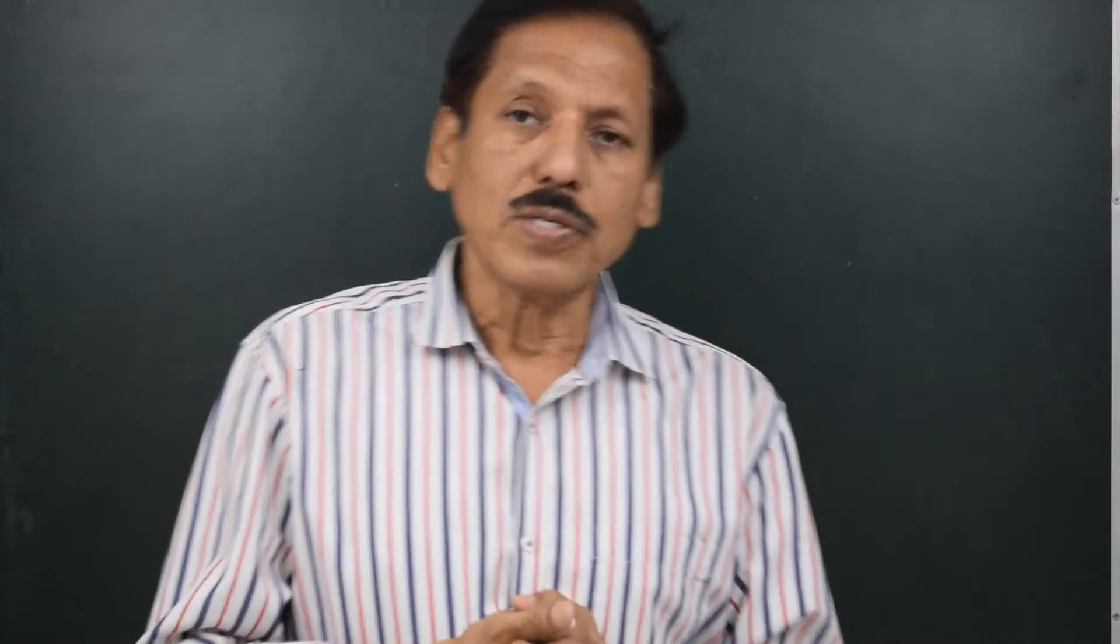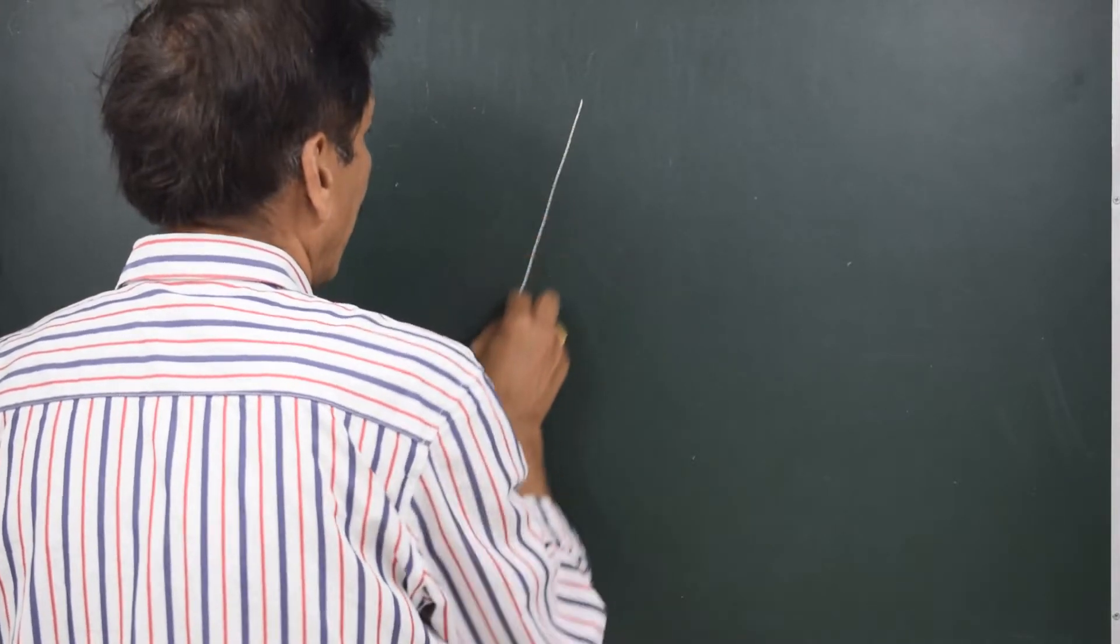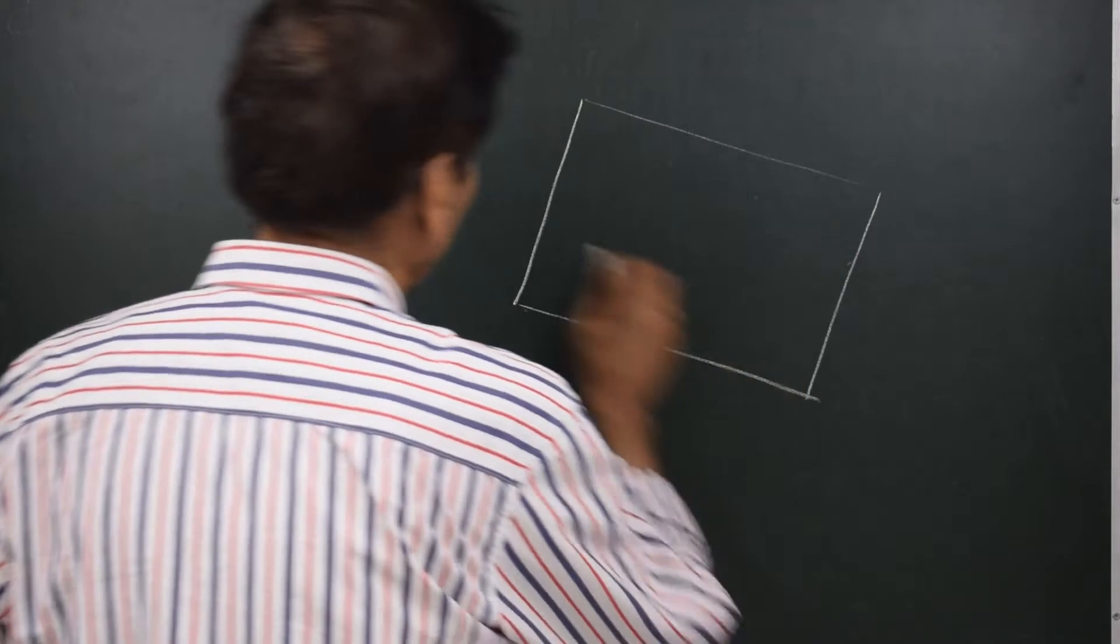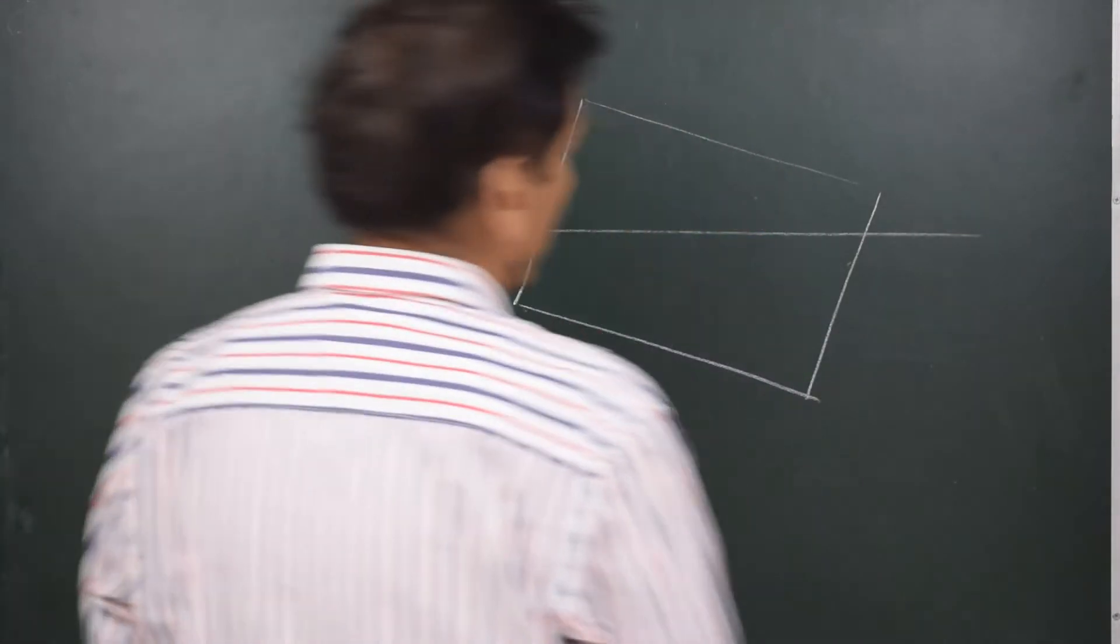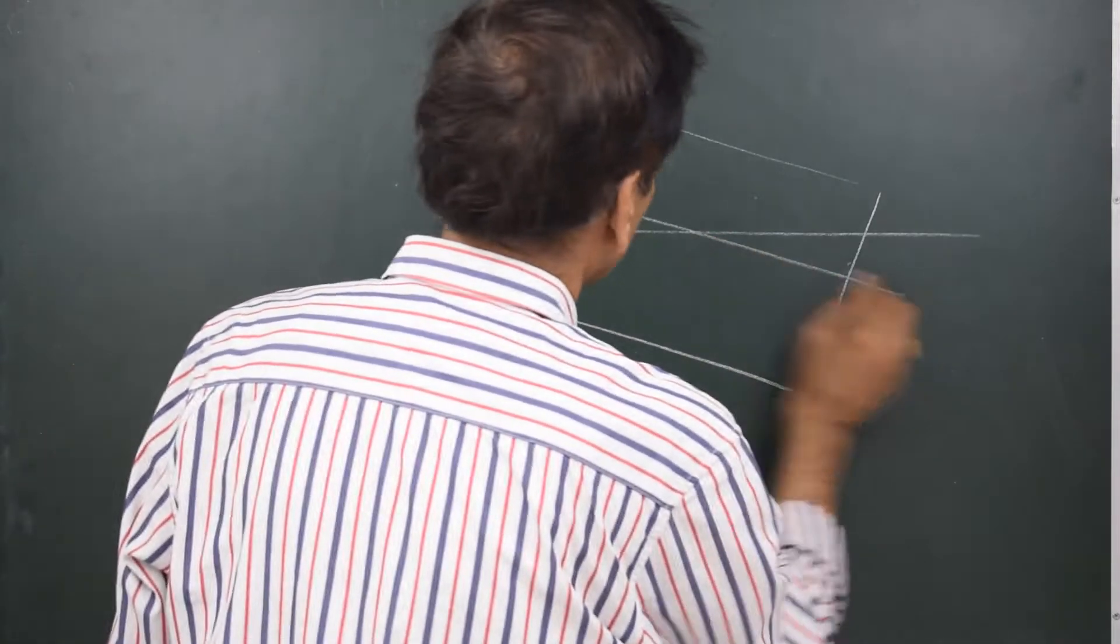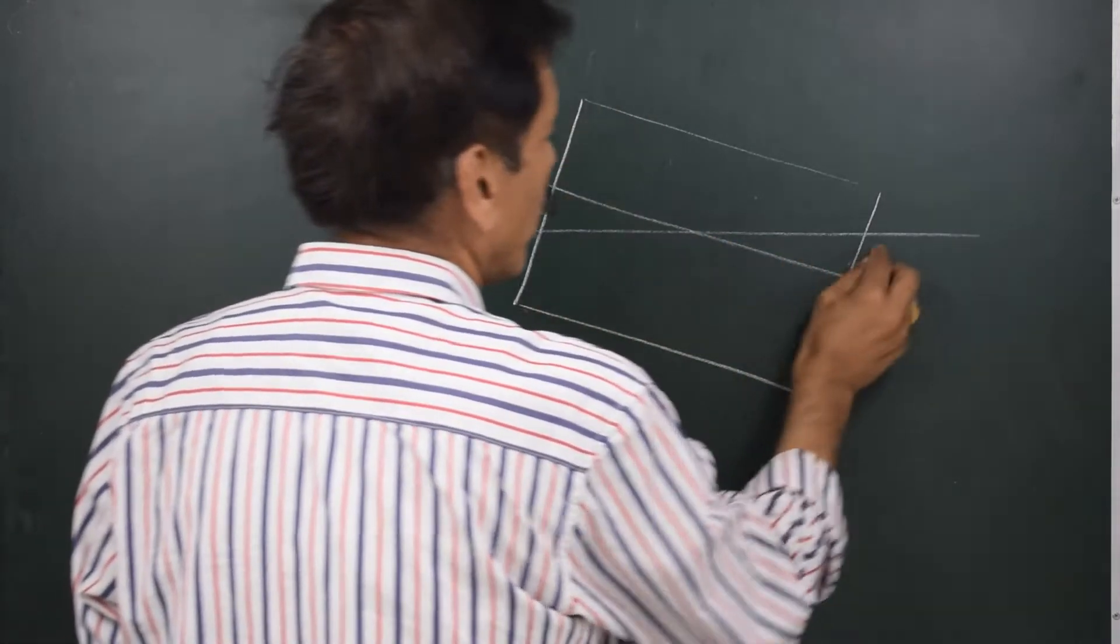The stability information is given in the form of cross curves or KN curves. Let us look at the diagram of box vessel. What is KN? Let us try and understand in this diagram.